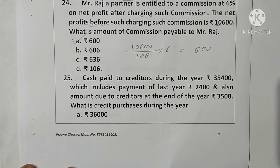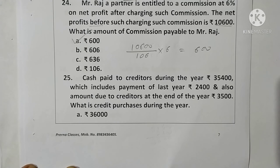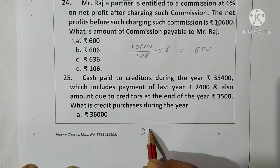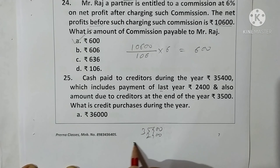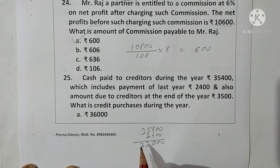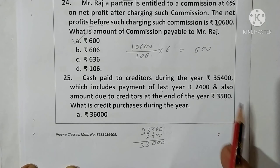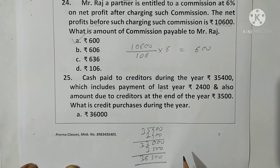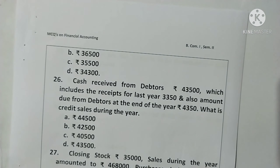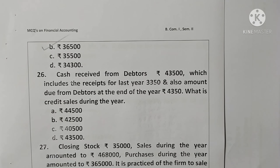Question 25: Cash paid to creditors during the year is rupees 35,400, which includes payment of last year rupees 2,400, and amount due to creditors at end of year is rupees 3,500. Credit purchases = 35,400 − 2,400 = 33,000; add closing creditors 3,500 = rupees 36,500. Option B is correct.